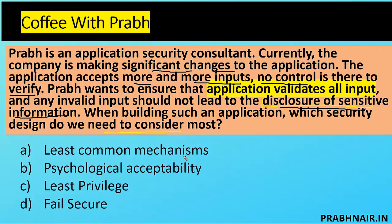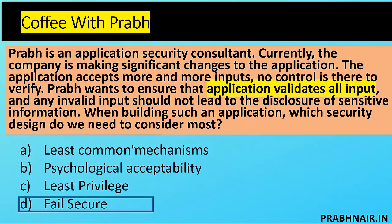We already discussed least common mechanism, psychological acceptability, and least privilege. But this is more about restricting the set of information disclosed. The answer is fail secure. Fail secure ensures that if an application fails, it will seize all information. A good example of fail secure is a firewall: if a hacker disrupts or shuts down the firewall, the firewall disconnects all connections — blocking them from one side to the other, failing in a manner that maintains security. That is what is missing in this application.